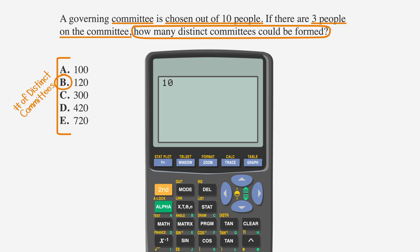Next, hit math and scroll over 3 until you get to PRB, which stands for probability. Press 3, which will say NCR. Now type in the number of times that you're picking from your set. In this case, that's 3. Hit enter. See? 120 it is.